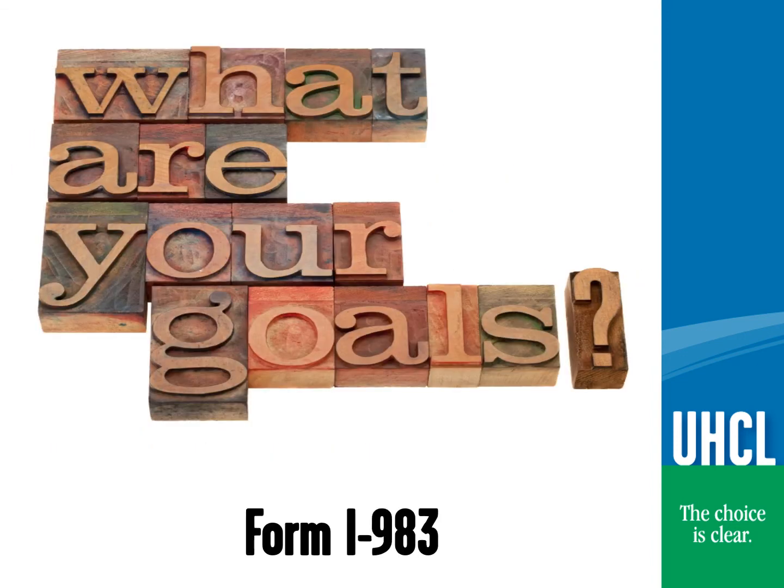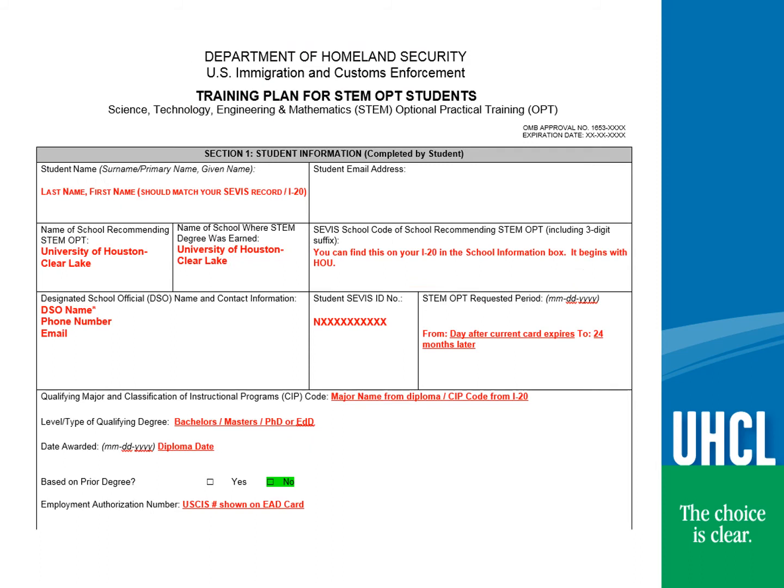Please take out your I-20 at this time. We will be reviewing the key areas of the Form I-983 that are important for you to know when you are completing this form. Although you must complete the entire form, we will only be reviewing sections where we think you will need additional information. The Form I-983 can be completed as typewritten or handwritten, although a typed Form I-983 is preferred. The name of the school where a STEM degree was earned should be UHCL unless you are applying for STEM based on a previously earned degree at another accredited U.S. institution.